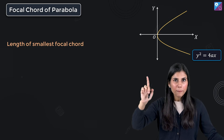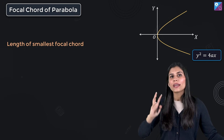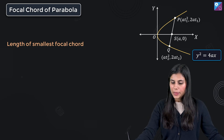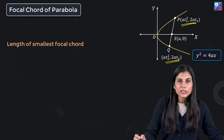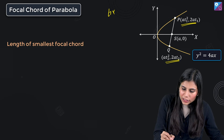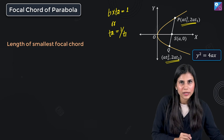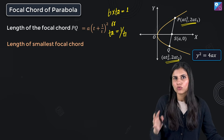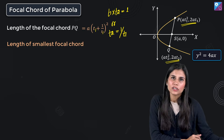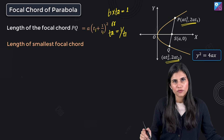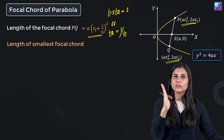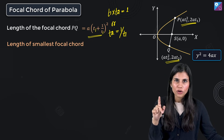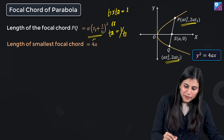So if T is the parameter of P, one extremity of the focal chord, the parameter of Q will be 1/T. For the standard rightward opening parabola y² = 4ax, with parametric coordinates written for both P and Q, T1 × T2 = 1, or T2 = 1/T1. The length of the focal chord is given by a(T + 1/T)², written as a(T1 + 1/T1)². If the focal chord is perpendicular to the axis of symmetry, it becomes the latus rectum — the smallest focal chord — with length 4a.